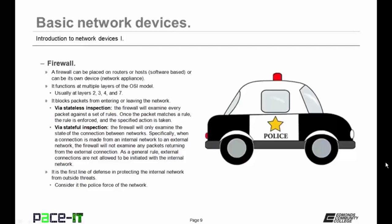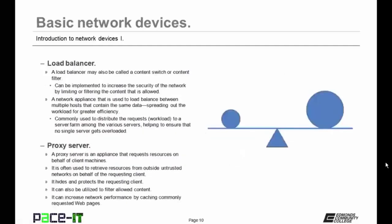Firewalls are usually the first line of defense in protecting the internal network from outside threats. You can consider the firewall as the police force of the network. Then we have load balancers. A load balancer may also be called a content switch or content filter. Load balancers can be implemented to increase the security of a network by limiting or filtering the content that is allowed to be on the network.